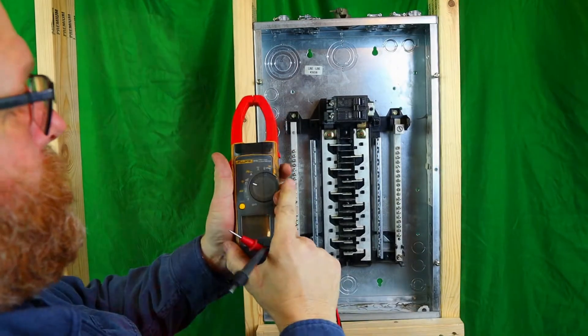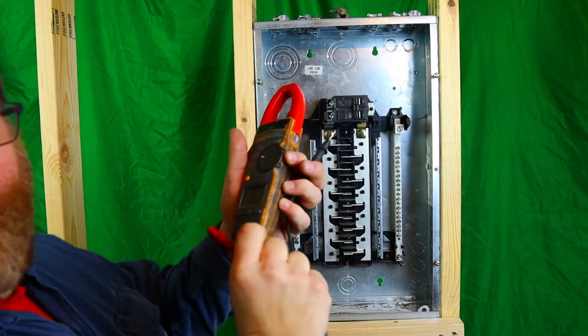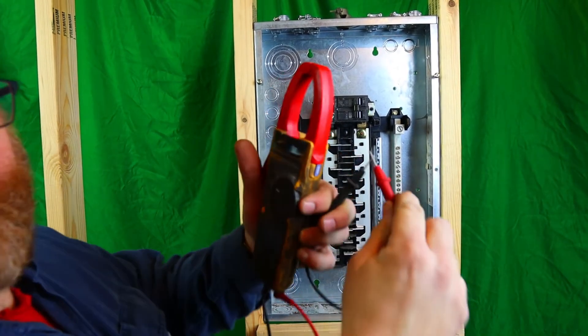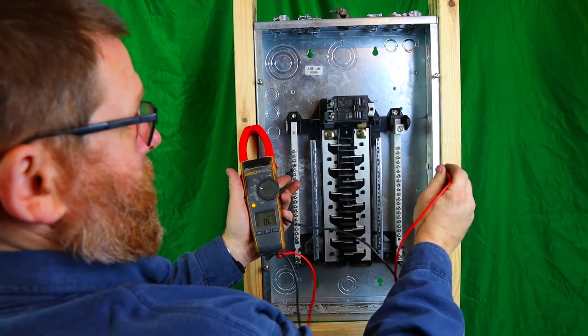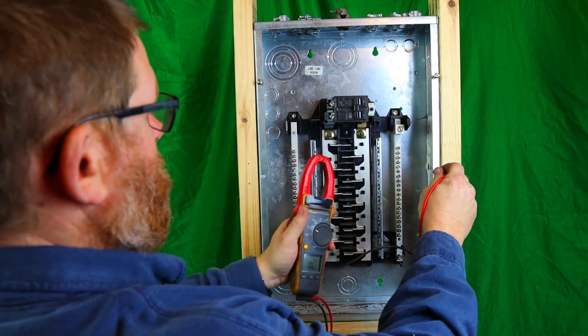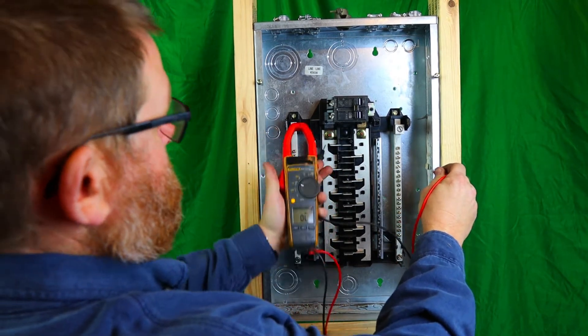So we're going to put it on ohms. We're going to check our meter to make sure everything works - you can hear that. We're going to take one lead and we're going to put it to this can. We're going to put it here - you don't see nothing because this is the bus bar, this comes off, you're hot.